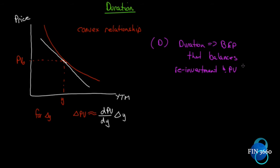Duration tells us how long in years we must hold a bond to hit break-even. On a 10-year bond, we might have a duration of 7.25, meaning for a given change in yield, we may have to hold the bond 7.25 years to realize a balance between the change in price and the change in reinvestment return. So we can think of it as a break-even point. Now let's figure out how to calculate this thing called duration.